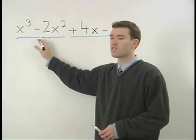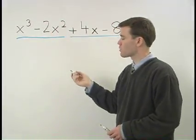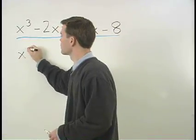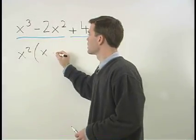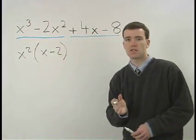The greatest common factor for x cubed minus 2x squared is x squared. That leaves you with x minus 2 inside the parentheses.